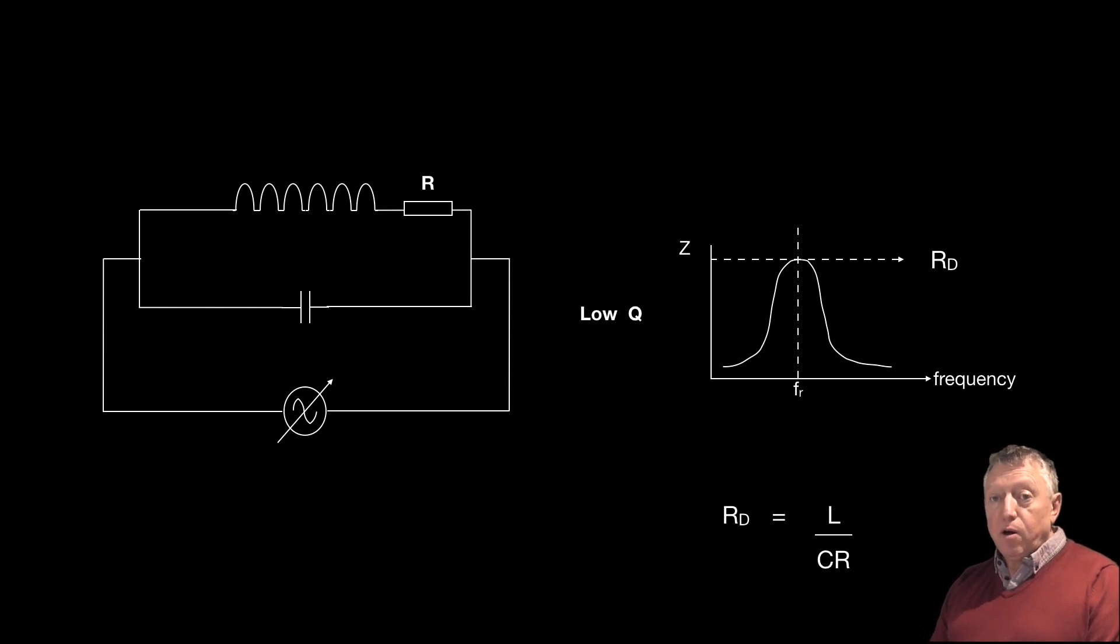Again, that is in the equation sheet that you'll be given in the exam. So if you were to find out what the current is through a high Q circuit, and you were given what R was, you could find out what the dynamic resistance was, and therefore how much current would flow through the circuit at resonance.